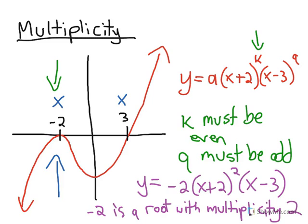And it's multiplicity 2 because this is the exponent on the root in factored form. So that could have just as easily been to the power of 6 and then it would be multiplicity 6 versus 3. 3 is a root multiplicity 1.